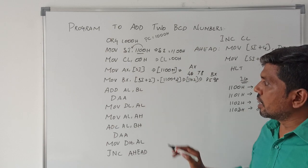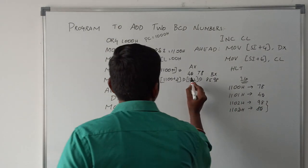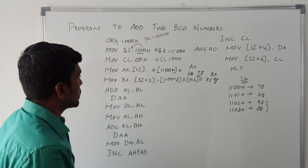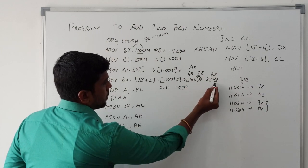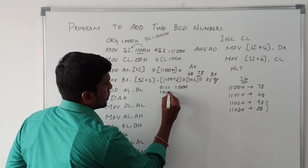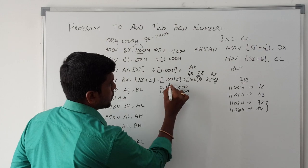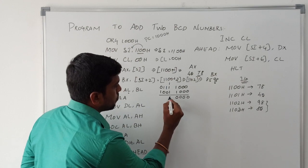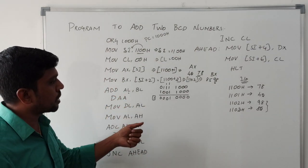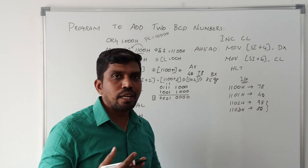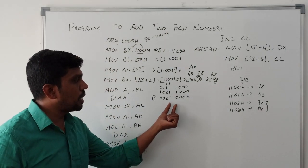The next instruction is ADD AL, BL — adding the two register contents, one from AL and another from BL. AL register content is 78H and BL register content is 98H. AL in binary is 01111000 and BL is 10011000. Adding the two contents: 01111000 plus 10011000 gives result 10110000 with carry produced. The result is not a valid BCD number because it produces an auxiliary carry and a carry value.